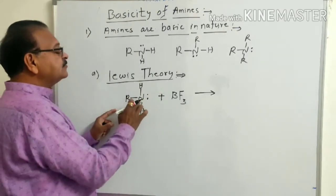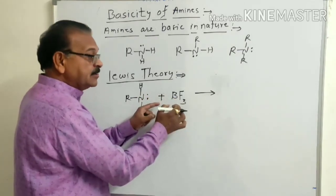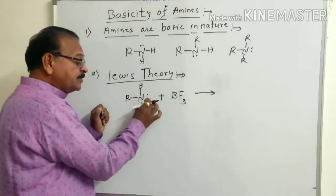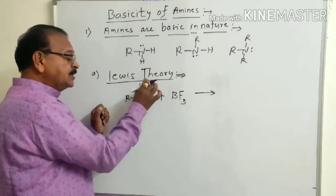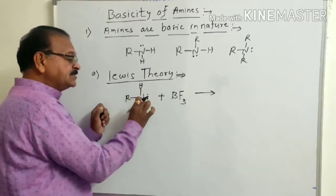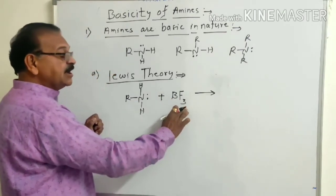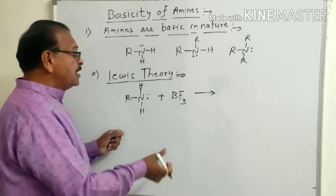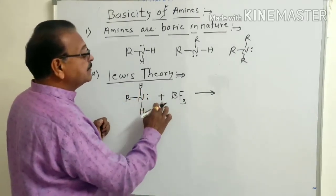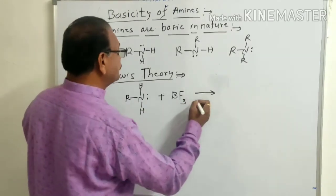In all amines, nitrogen has a lone pair of electrons which can be shared or donated. According to Lewis theory, the species which have the tendency to donate the electron pair to electron-deficient species and form coordinate bonds are called as bases. When primary amine is treated with an electron-deficient species, for example boron trifluoride, a coordinate bond is formed.